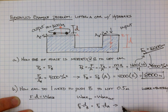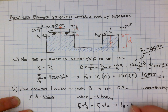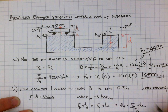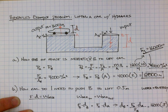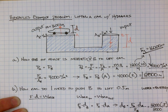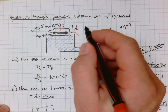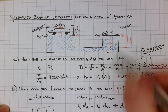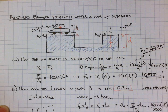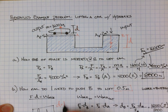Solving for the distance at B: it equals the force at A times the distance at A over the force at B — which is 16,000 times 0.5 over 8000. That gives a distance at B of one meter. So while I have to push for one meter at B to get only half a meter of lift at A, I'm applying a smaller force, which makes it seem easier.